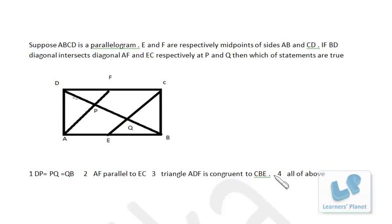Now, let's solve this problem based on geometry. Suppose ABCD is a parallelogram. E and F are respectively midpoints of sides AB and CD. If BD diagonal intersects diagonal AF and EC respectively at P and Q, then which of the statements are true? Now, ABCD is a parallelogram. That means AB is equal to and parallel to CD, and BC is equal to and parallel to AD.